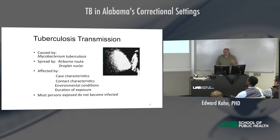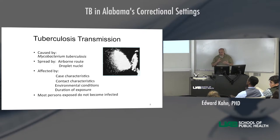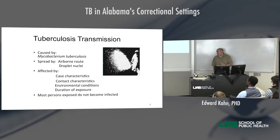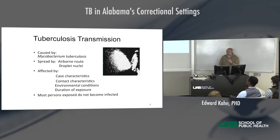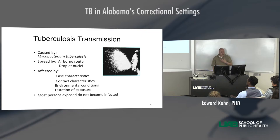Contact characteristics refers to the person potentially at risk of getting infected. If their defenses are down — poor nutrition, or if their immune system is weak or compromised by HIV, immunosuppressive medications, TNF inhibitors, steroids, or cancer chemotherapy — that makes a contact very vulnerable to getting TB. Because 90% of us, if we breathe in TB, our immune system will fight it, contain it, and we may never even know we were exposed.